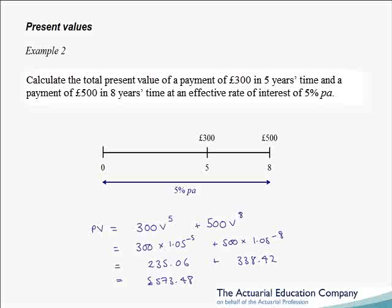So if you invest this sum at time 0 at 5%, we'll have enough money to pay the 300 pounds at time 5, and then the remaining amount which accumulates to time 8 will be exactly enough to pay the 500 pounds there.